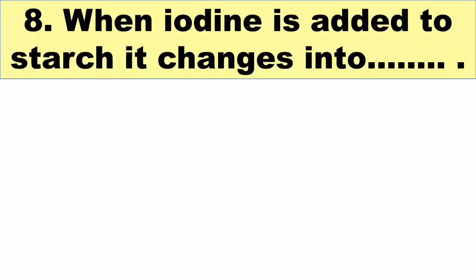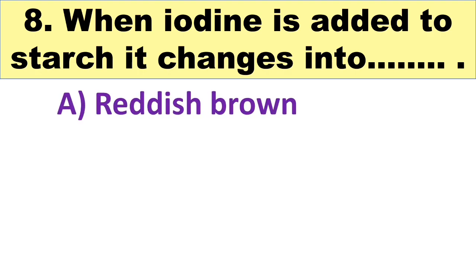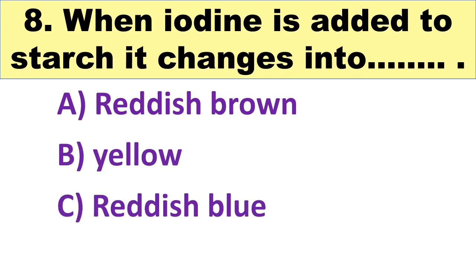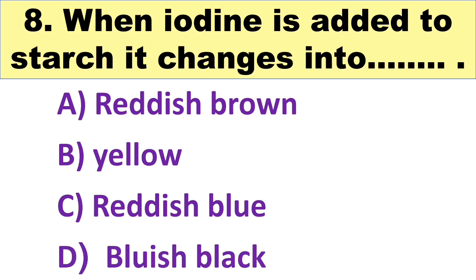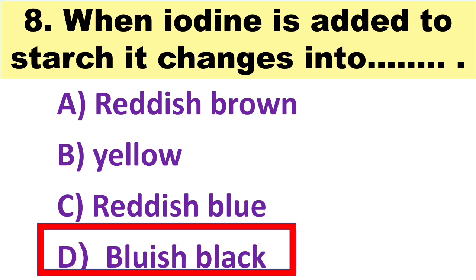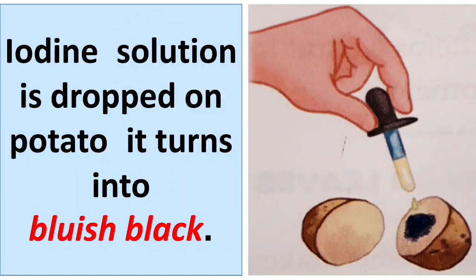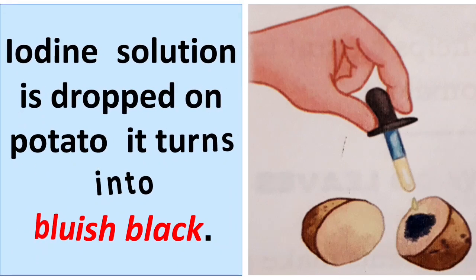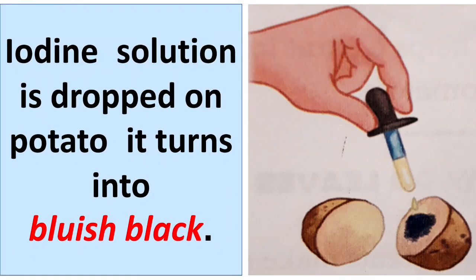The next question is: when iodine solution is added to starch, it changes into A. Reddish brown, B. Yellow, C. Reddish blue, and D. Blueish black. The right answer is D. Blueish black. When iodine solution is dropped on a potato slice, it turns blueish black. Remember it — it's very important.